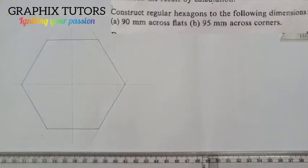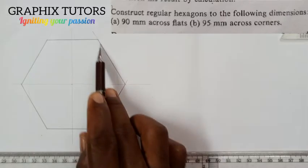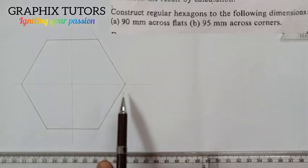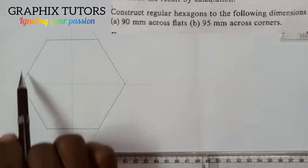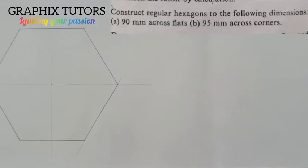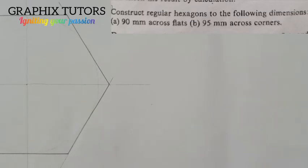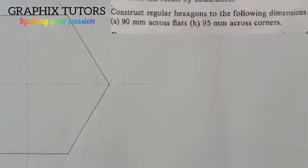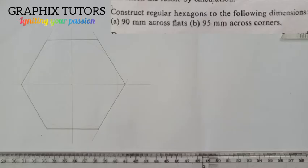This is the hexagon across flat. The difference is that the sides of the polygon are touching the circumference of the circle. Look at this closely — the sides of the polygon are touching the circumference of the circle. That is why we call it across flats.